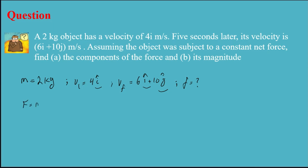F is equal to ma. Here I need to find the acceleration first. Acceleration is vf minus vi divided by t. My initial velocity is in the x direction because the unit vector is i, so vi is 4i.